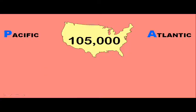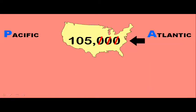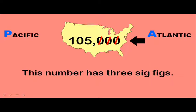Consider the number 105,000. A decimal is absent, so we start counting on the Atlantic Ocean side. And if there are any zeros on that side, we skip over them. Once we get to a non-zero digit, we would count every single digit from that point on. Therefore, this measurement, 105,000, has exactly three sig figs.